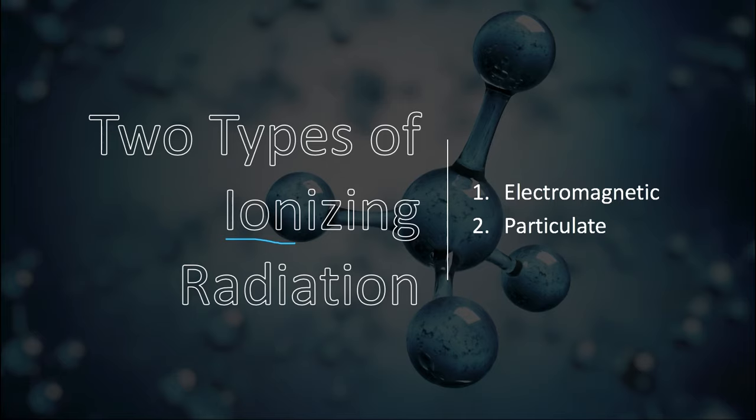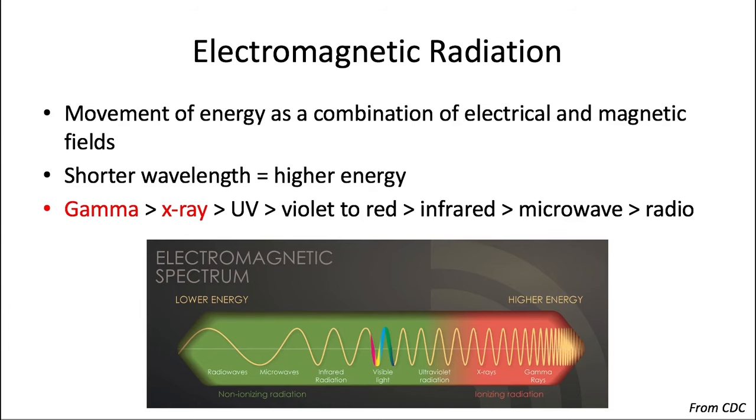So electromagnetic radiation is the one we've already been talking about, and it refers to movement of energy through space as a combination of electrical and magnetic fields, hence the name electromagnetic radiation. So this is all about waves of energy, and they travel at the speed of light. The wavelength refers to the distance between crests of a wave. The shorter this distance becomes, the higher energy a wave is.